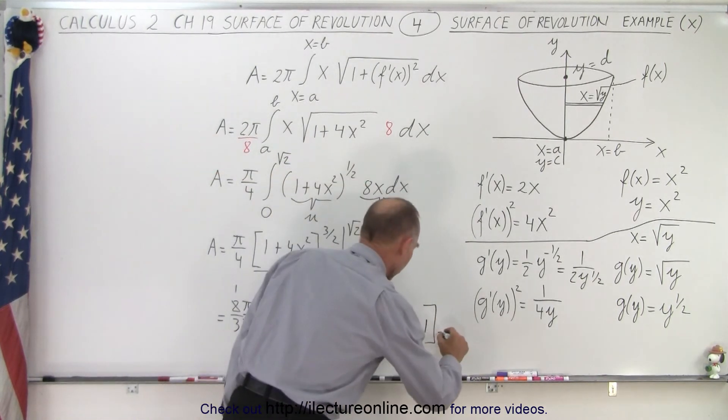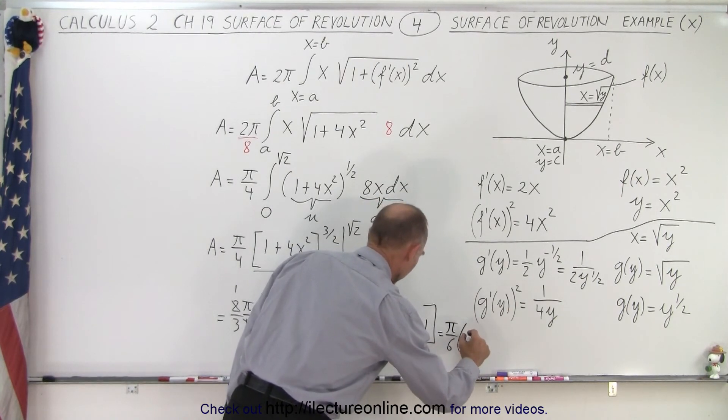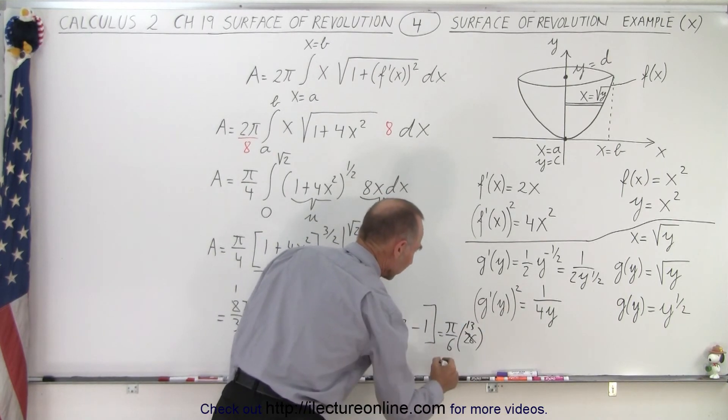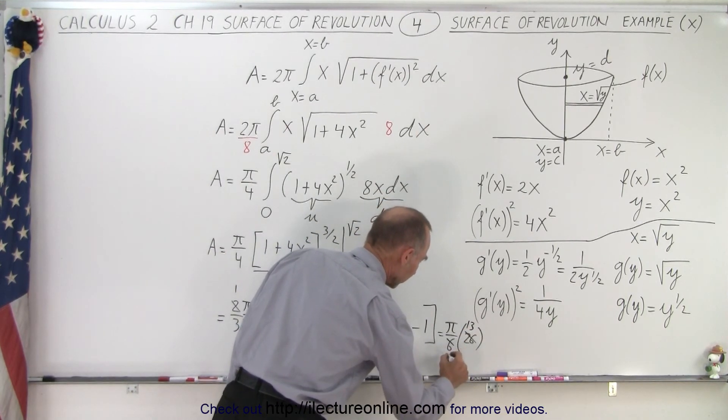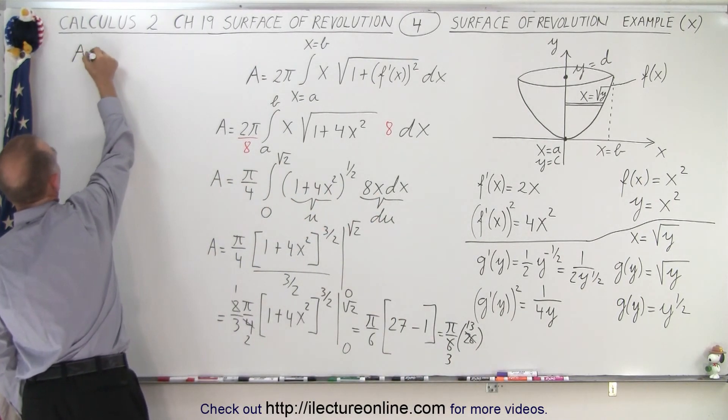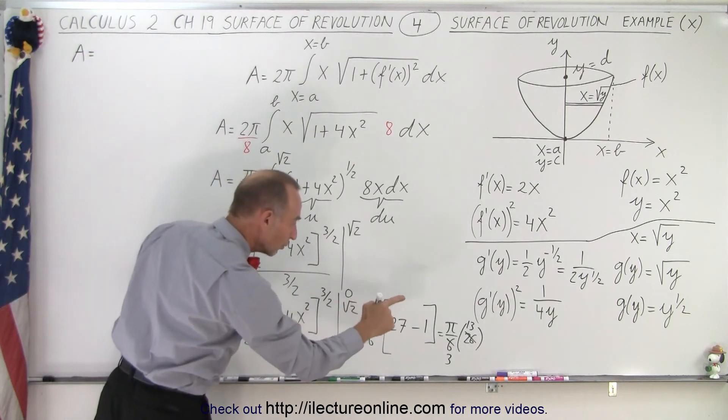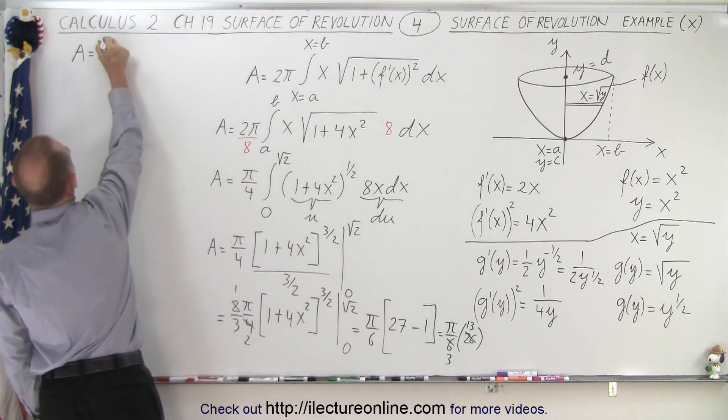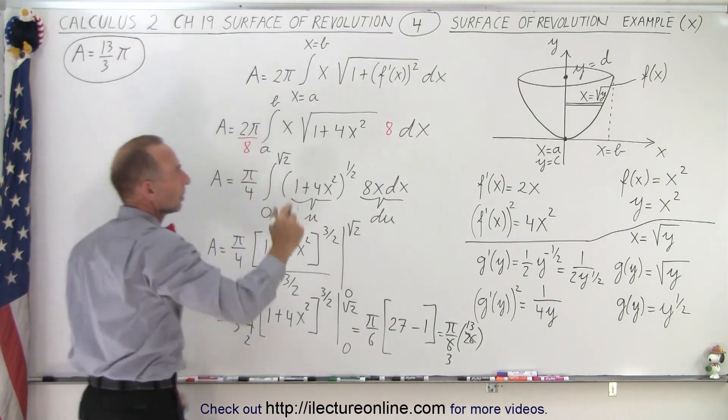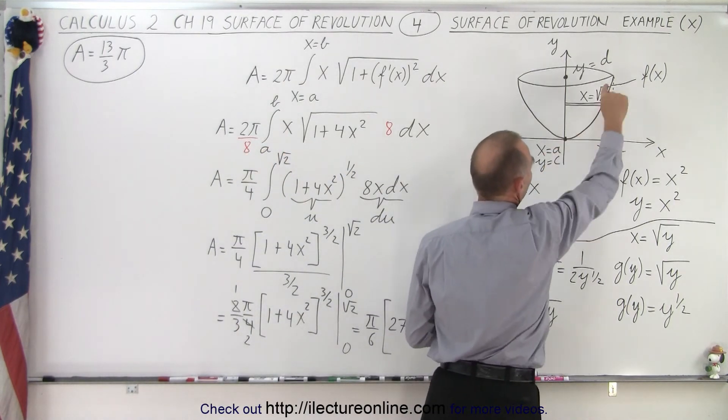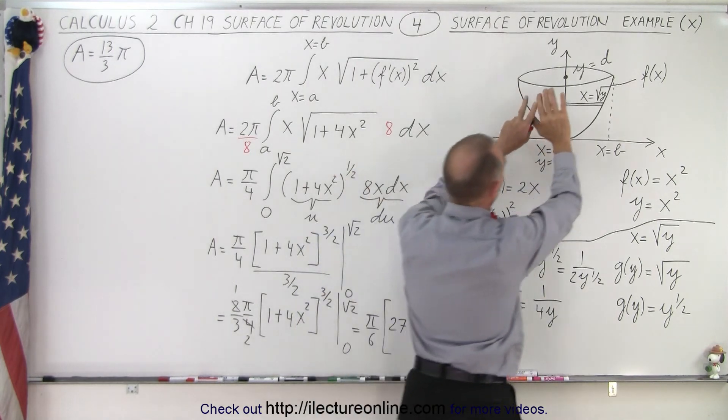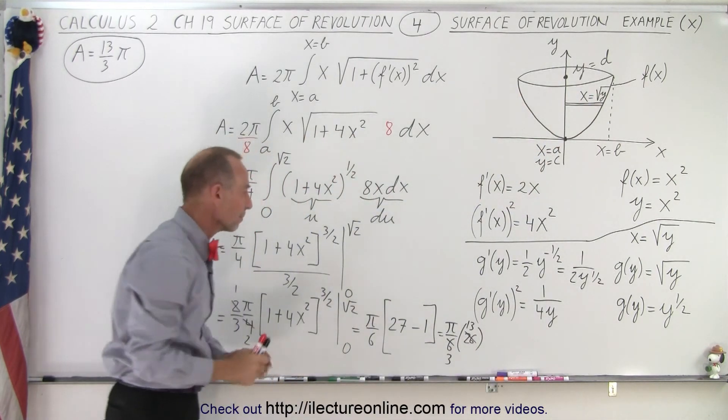So that gives us π over 6 times 26. And then notice the 26 divided by 2 is 13. The 6 divided by 2 is 3. So that means that the area, let's just put it up here, the area then becomes equal to 13 over 3 π. There we go. So that's the surface area that we obtain when we take this curve f(x), which is x squared, and we revolve it around the y-axis. And so it's the surface of the shape that's then equal to 13 over 3 π.